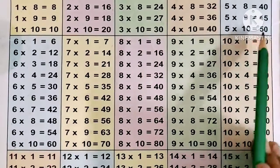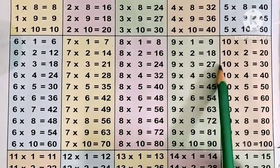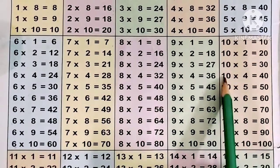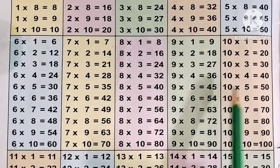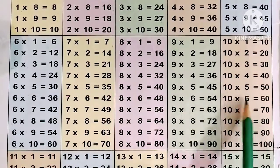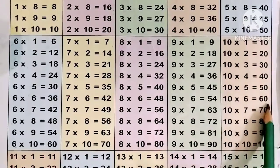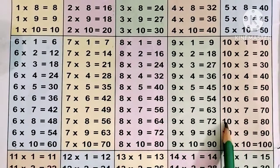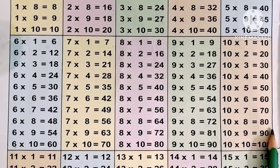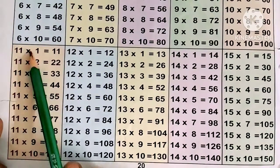Now the 10 times table. 10 ones are 10, 10 twos are 20, 10 threes are 30, 10 fours are 40, 10 fives are 50, 10 sixes are 60, 10 sevens are 70, 10 eights are 80, 10 nines are 90, 10 tens are 100.